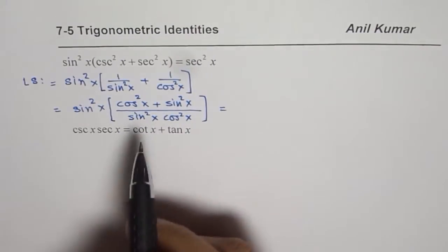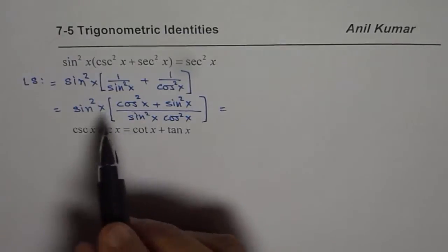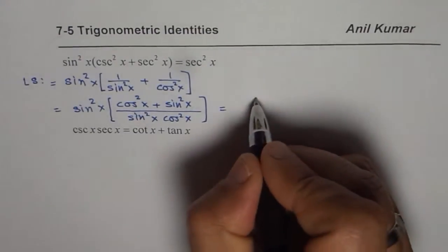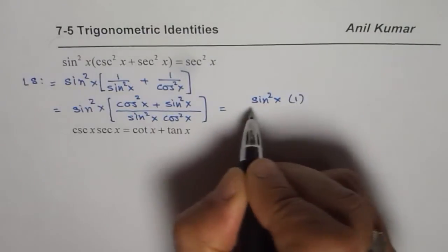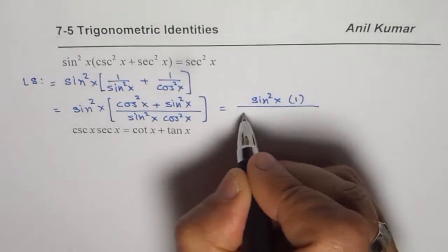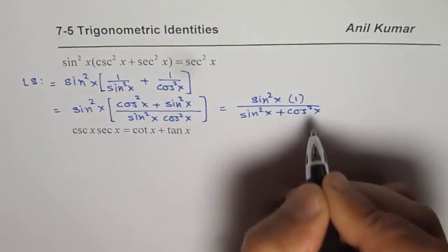Now as you know, Pythagorean identities: cos²x + sin²x is 1. So we get sin²x times 1 over (sin²x + cos²x).